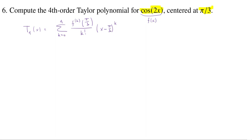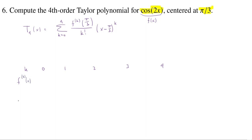In order to do this, let's make a little chart. Our k is going to run between 0 and 4: 0, 1, 2, 3, and 4. We're going to need the k-th derivative of f, and then we're going to need to evaluate that k-th derivative at pi over 3.